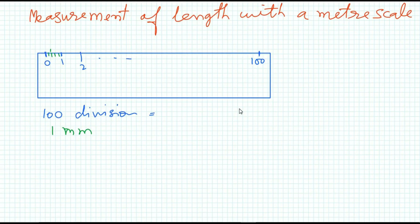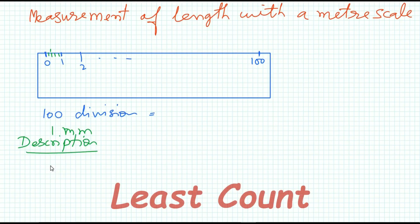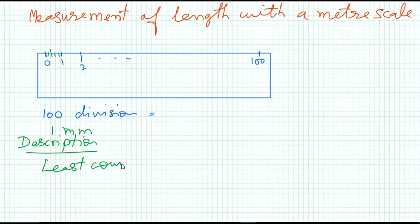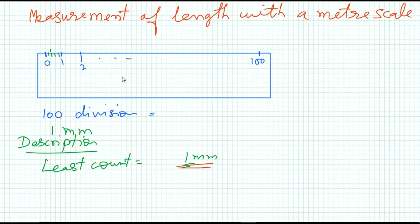The least count of a meter scale is 1 mm. That means we can measure a length accurately with a meter scale up to 1 mm — below 1 mm we cannot measure with the meter scale. So the least count of a meter scale is 1 mm.